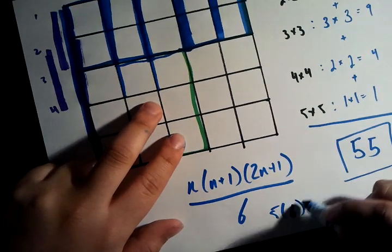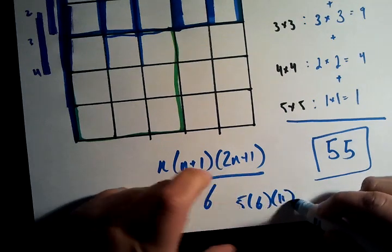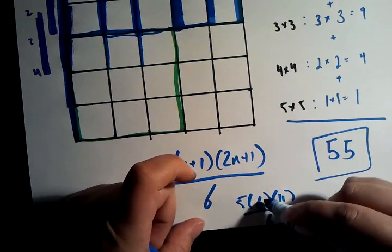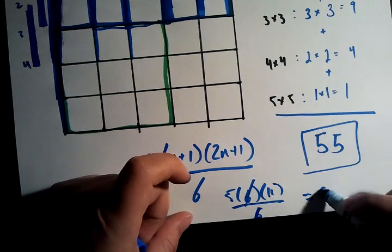We put 5 times 6. 5 times 2 is 10. 11 over 6. And this 6 cancels with this 6. And we get 55.